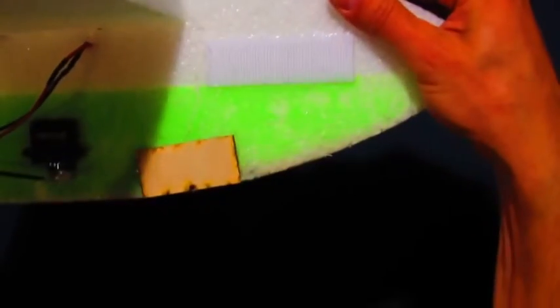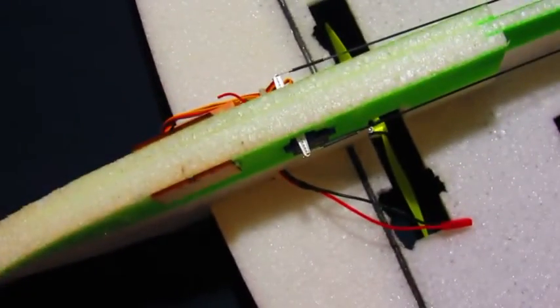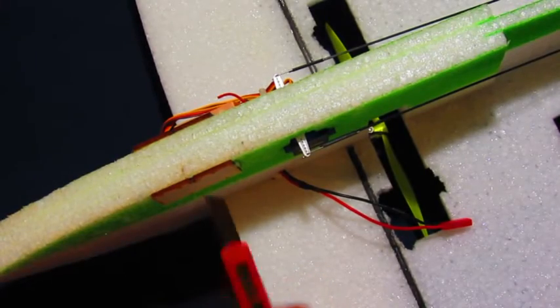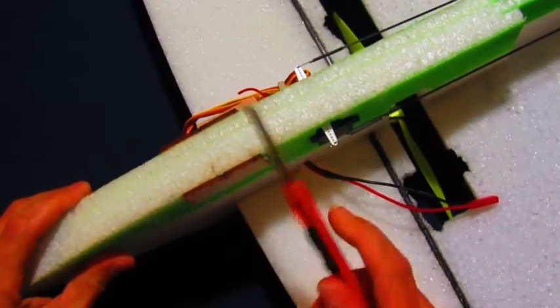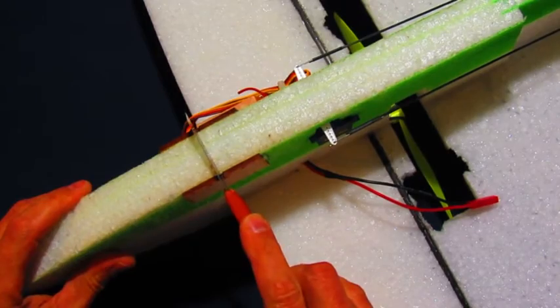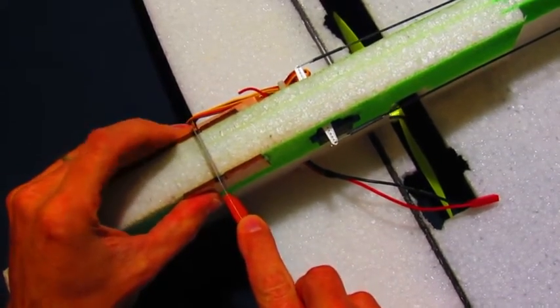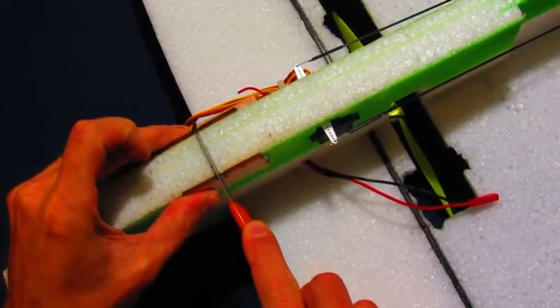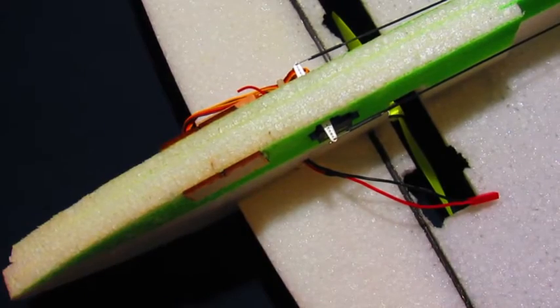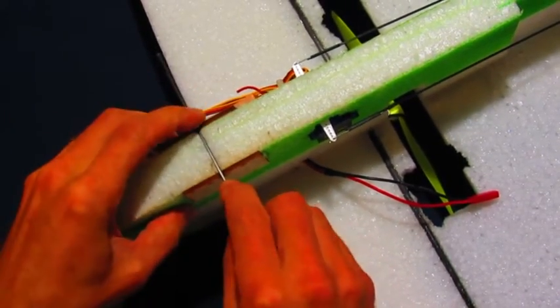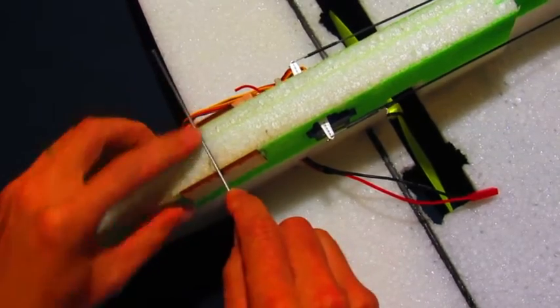Our plywood plates are in place. Now, I'm going to take my knife, and placing it in the notches in the plywood, I'm just going to cut a little slot right down into the foam. That allows the carbon rod to sit down in the foam.